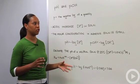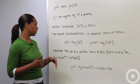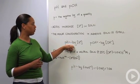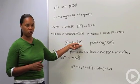So that's why we actually use the log scale, so that we can discuss orders of magnitude changes between various solutions. The basic definition of pH is that it's equal to negative log base 10 of the concentration of protons in your solution.